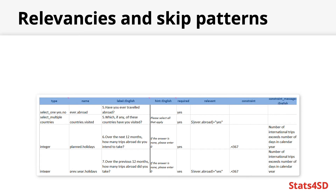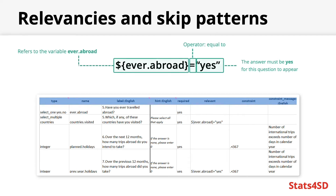By writing dollar sign, open curly bracket, ever.abroad, close curly bracket, equals yes, we have coded it so that this question will only appear if the respondent answers yes to the question 'have you ever travelled abroad?' — which precedes this one. Therefore we avoid asking the question to someone for whom it would not be relevant. In this picture you can also see an example of a constraint message: if someone reports having more than 366 international trips in a year, a message appears saying 'number of international trips exceeds number of days in the calendar year'.